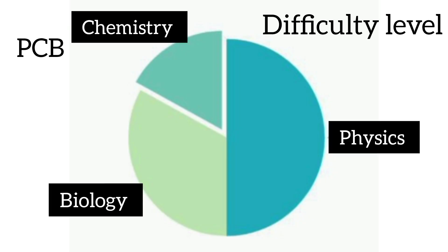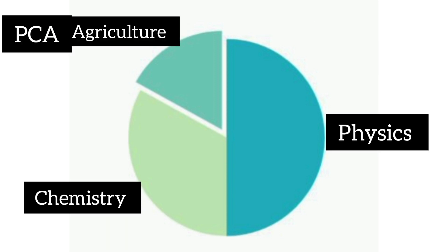Now let's check out the review of the exam. In PCB stream, i.e. Physics, Chemistry and Biology, most of the students said that Biology subject was a bit difficult. In PCA — Physics, Chemistry and Agriculture — according to students, Physics was very difficult.